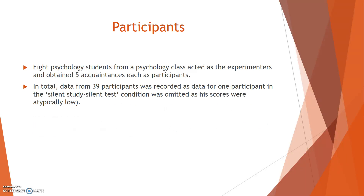Participants. Eight psychology students from a psychology class acted as the experimenters and obtained five acquaintances each as participants. In total, data from 39 participants was recorded, as data for one participant in the silent study-silent test condition was omitted, as his scores were atypically low.